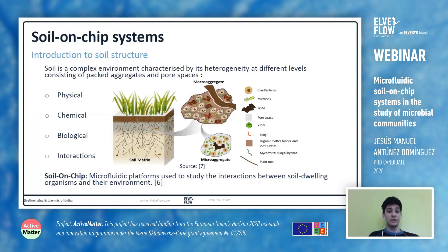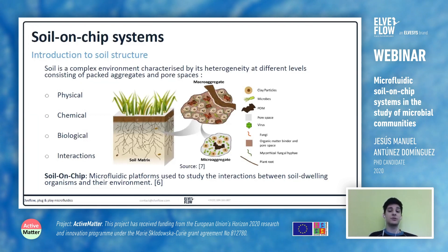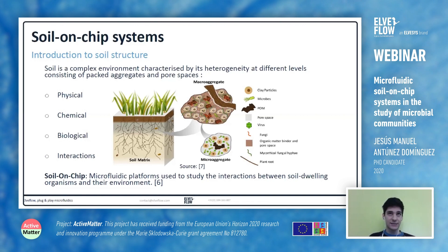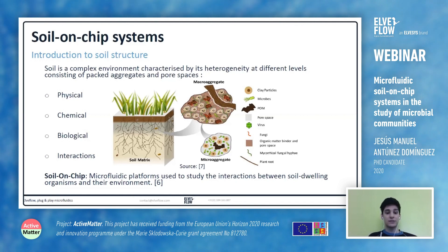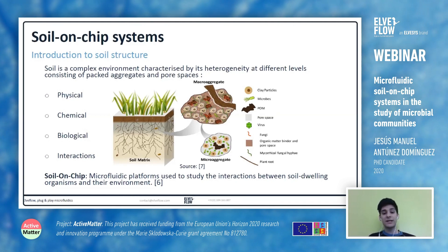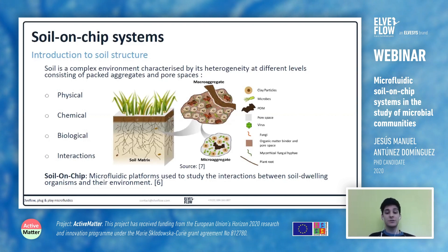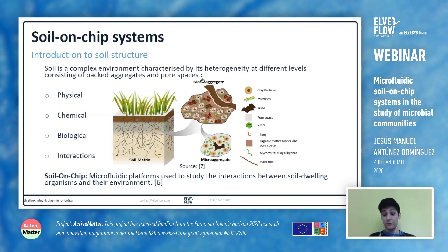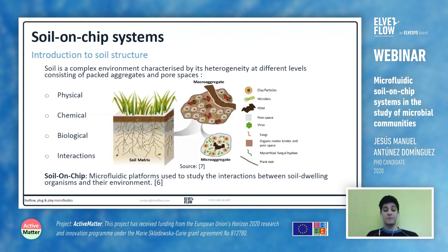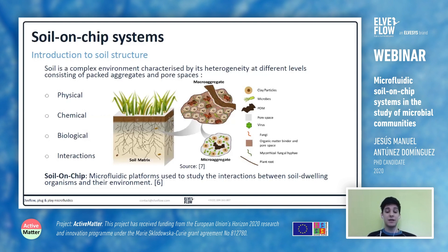The most important thing to know about soil structure is that it's characterized by its heterogeneity, which exists at different levels and in different categories. At the physical level, the soil is an irregular and intricate system made of different macro aggregates and pores. These macro aggregates are bound together through organic matter, plant roots, and fungal life, and are themselves made up of micro aggregates.